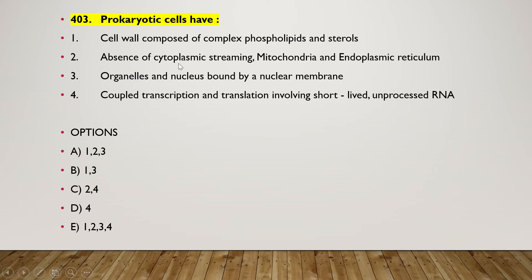Next question: prokaryotic cells have — (1) cell wall composed of complex phospholipid and sterols, (2) absence of cytoplasmic streaming, mitochondria, and endoplasmic reticulum organelles, (3) nucleus bound by a nuclear membrane, (4) coupled transcription and translation involving short-lived unprocessed RNA. The right answer is option C — option two and option four is the correct answer.